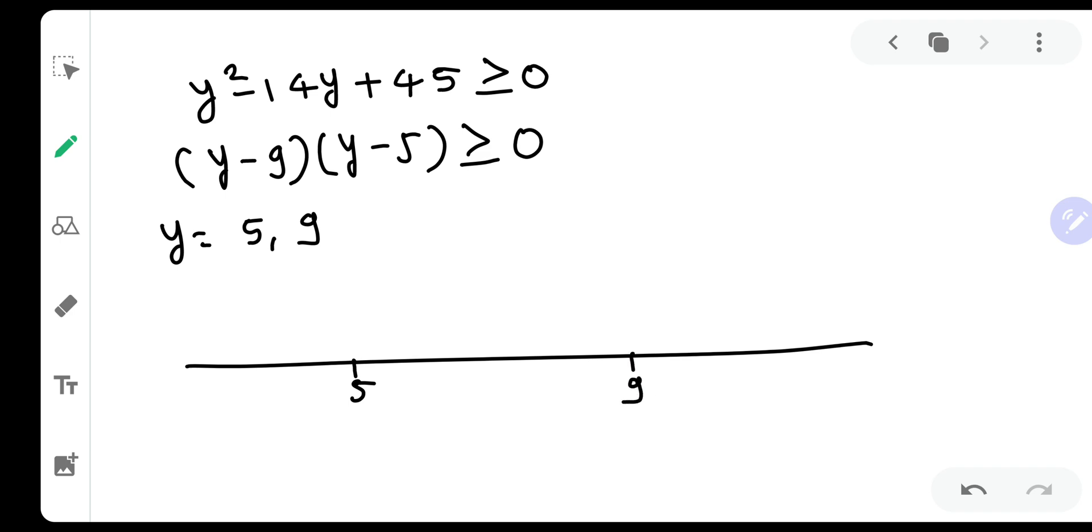To the right of 9 there can be 10. So put the right most value that is 10 let us say in the equation. 10 minus 9 is 1. 10 minus 5 is 5. 1 into 5 is 5 positive. So over here it is positive. So wavy curve something like this. At 9 the bracket has odd power. See y minus 9 raised to 1. So there will be a change in the sign. At 5 the bracket power is 1 which is again odd. So there will be a change in the sign from minus to plus.